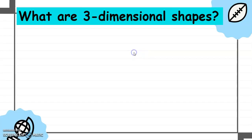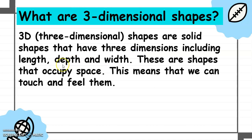Now, on the other hand, what are 3-Dimensional Shapes? 3-D or 3-Dimensional Shapes are solid shapes that have 3 dimensions including length, depth, and width. These are shapes that occupy space. This means that we can touch and feel them.